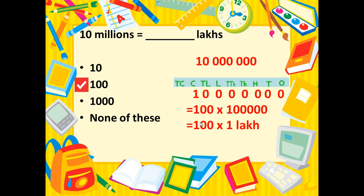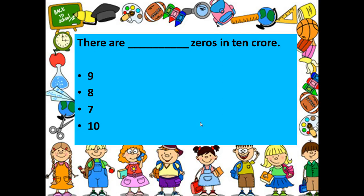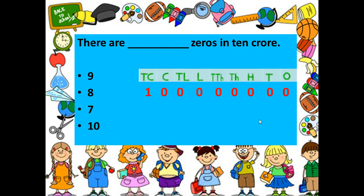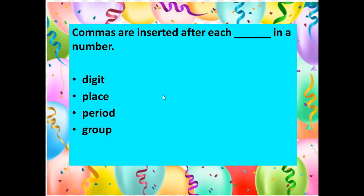The next question is: there are how many zeros in ten crores? We write ten crore in the Indian system and count: one, two, three, four, five, six, seven, eight — there are eight zeros. So the correct answer is eight.